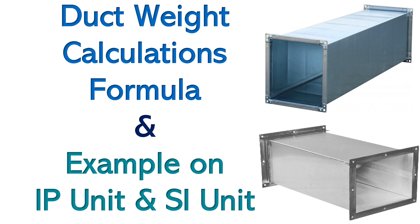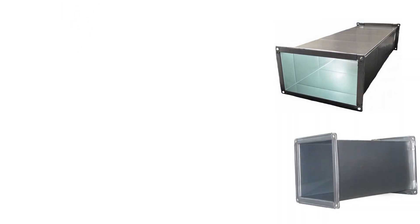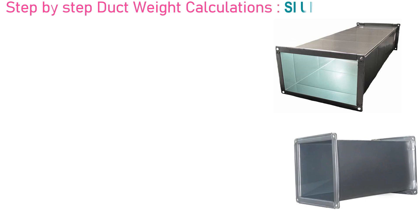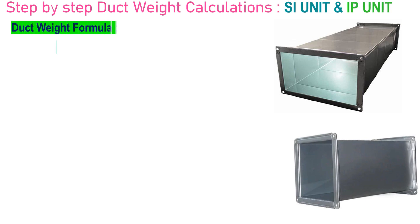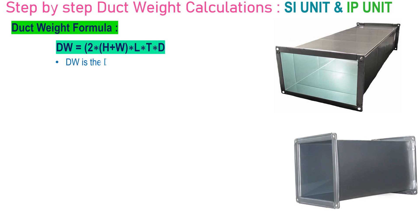Here are the formulas for calculating duct weight in both imperial units and SI units. The duct weight formula: to calculate duct weight, multiply the sum of the height and width by 2, multiply again by the length and thickness, then finally multiply by the density.